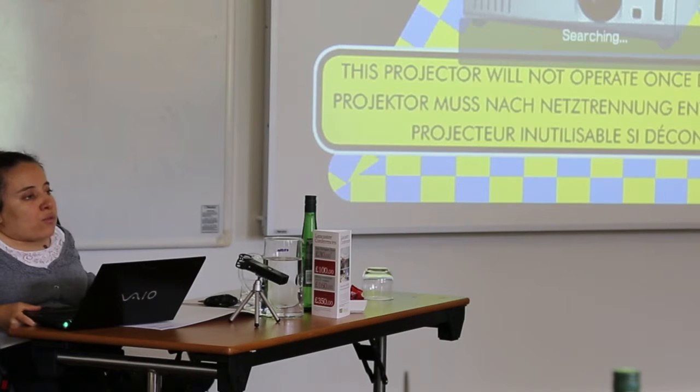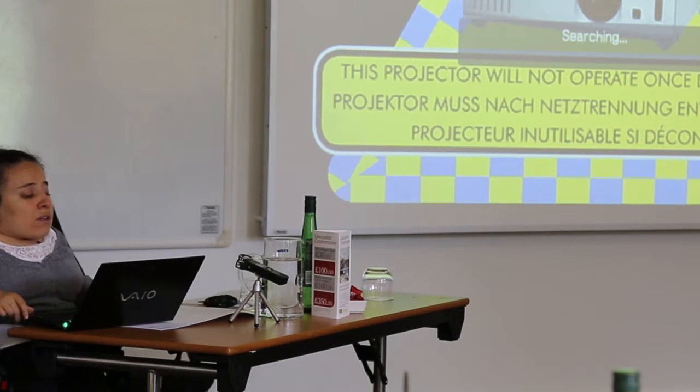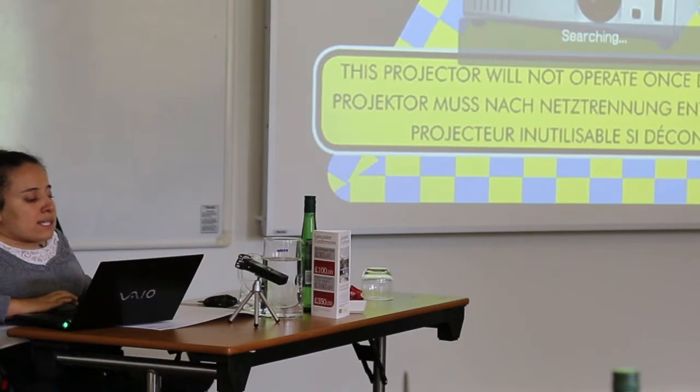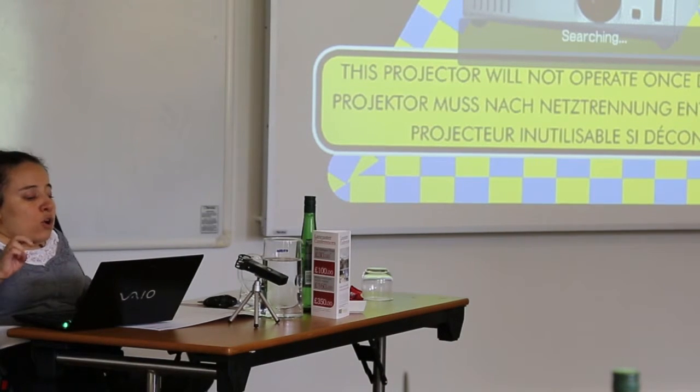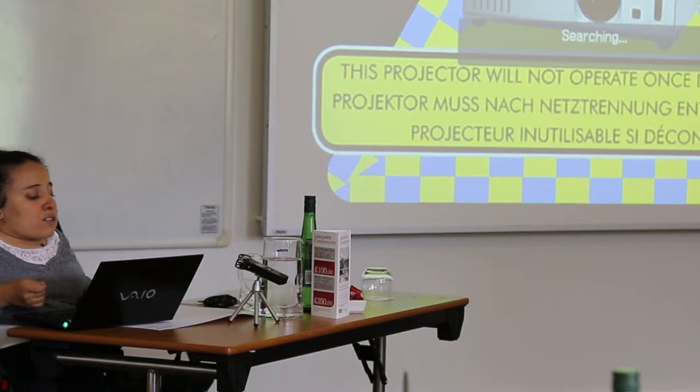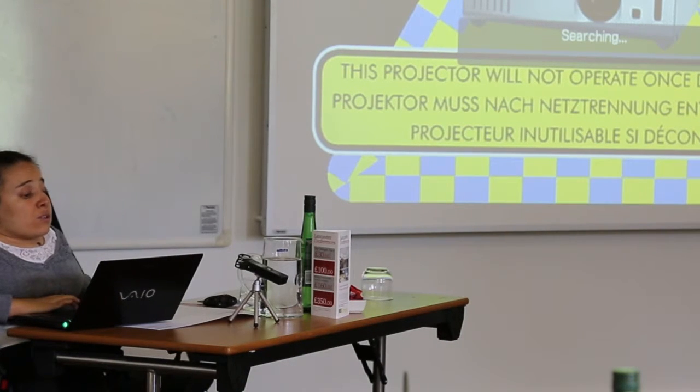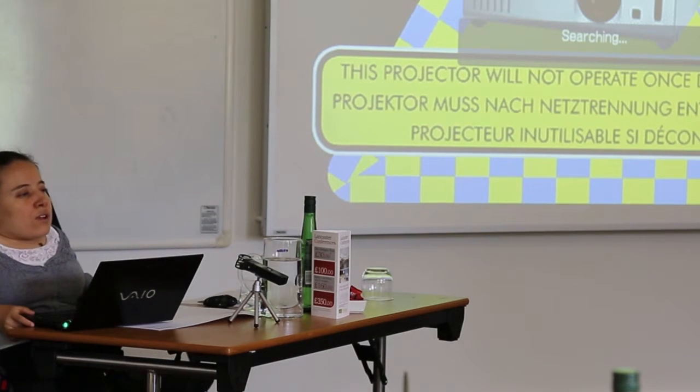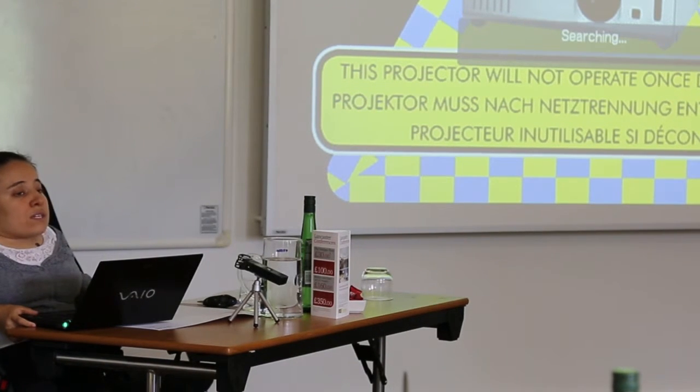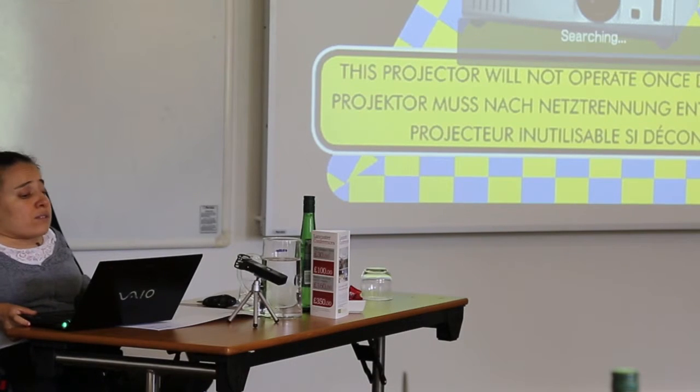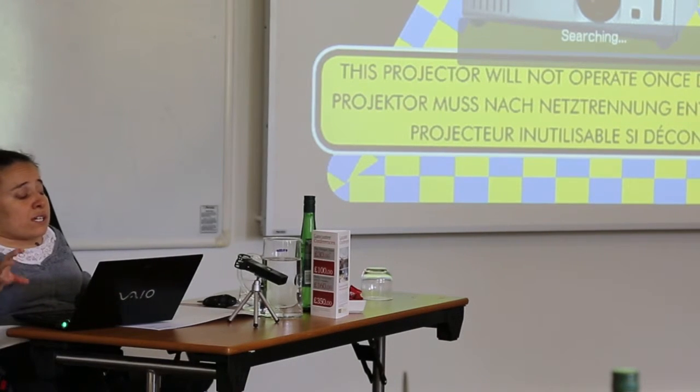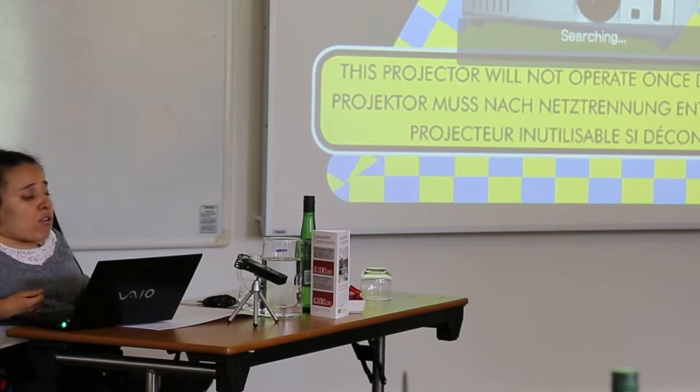Here I have a quote from Fiona Kumari Campbell. She defines ableism as a network of beliefs, processes, and practices that produce a particular kind of self and body, which is like a corporeal standard that is projected as the perfect species typical and therefore essential to be recognized as fully human. But all those standards are not fixed in time. They vary according to many different factors and are really located in specific cultural and historical context.